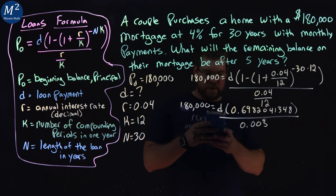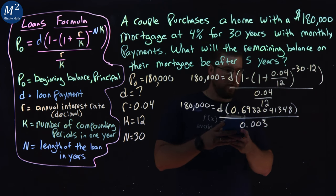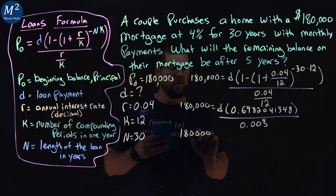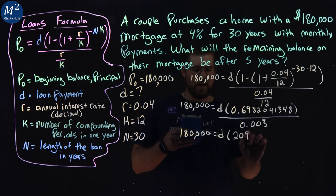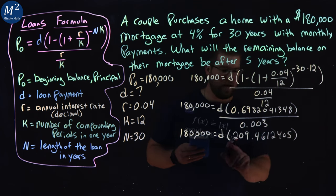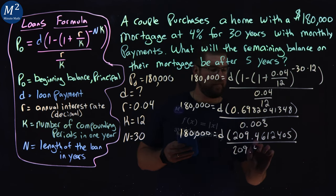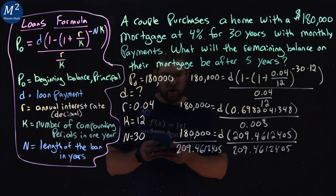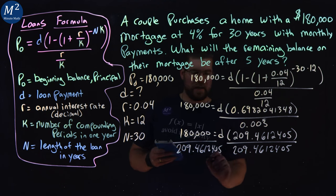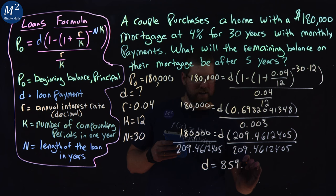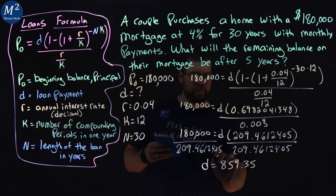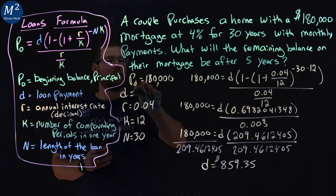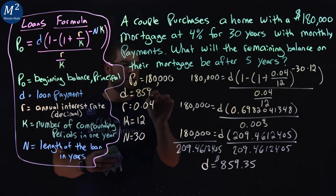Now, divide that out, 0.6982041348 divided by 0.003 repeating. A lot of 3's there. We have 180,000 equals D times that number 209.4612405. Divide both sides by that number here. And 180,000 divided by that number gives me a D value of $859 and let me round it to 35 cents. And so now we have our monthly payment. I'm going to go into here and write that down. So we have a monthly payment now of $859.35.